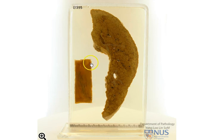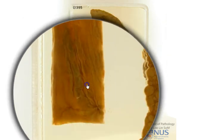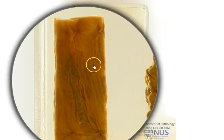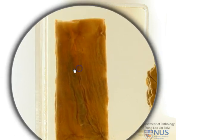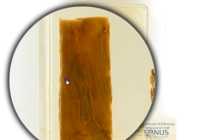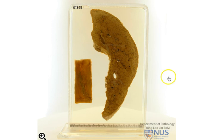Now let's look at the organ adjacent to the liver. We can see that it appears to be a tubular organ that has been opened up. If you haven't already guessed, this is the esophagus — a segment of the esophagus. We're looking at the mucosal surface, and we're trying to show this darkish area which represents a dilated, congested vein. This is actually an example of esophageal varices, which is a complication of cirrhosis due to portal hypertension.